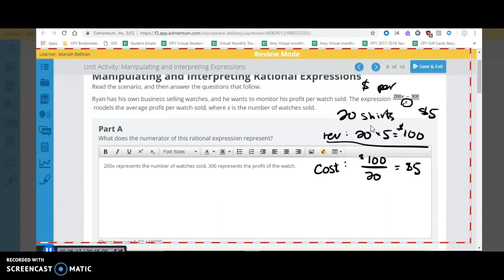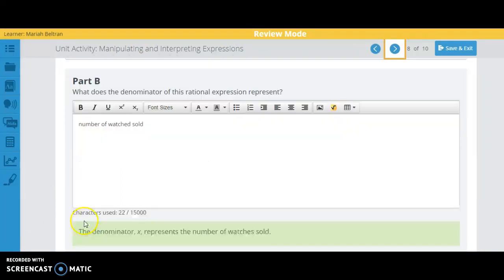So, if it asks you, what does the numerator represent, that would be right here. It would be like my $100. That would be the numerator. So, my $100 in this case, is how much money I made. So, in this case for him, it's how much money, his whole revenue, that he's selling for all of the watches.